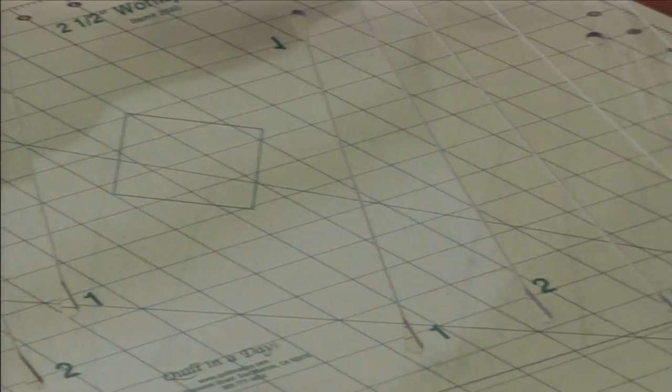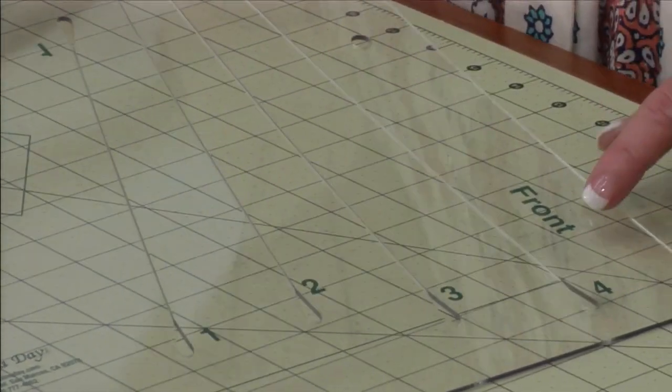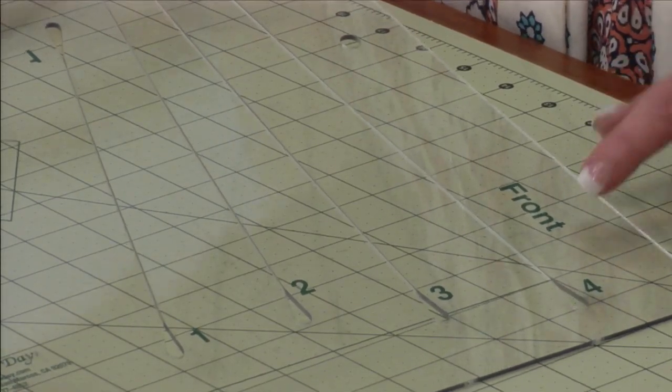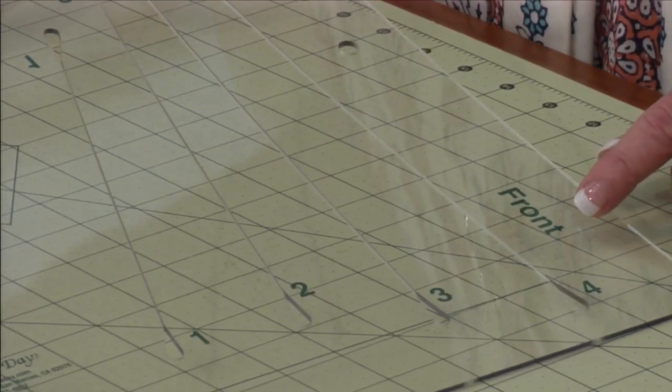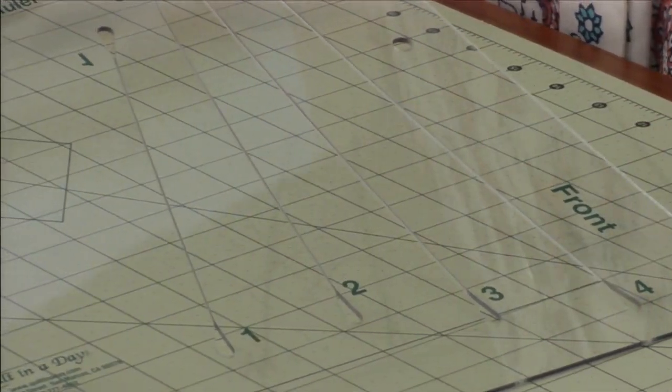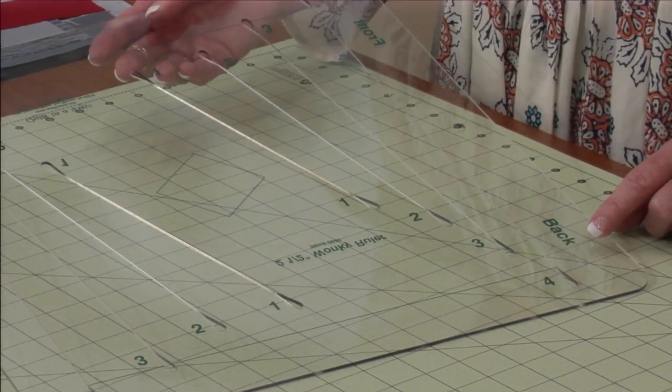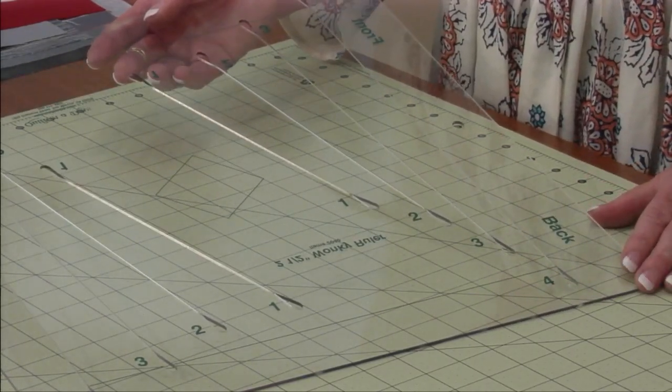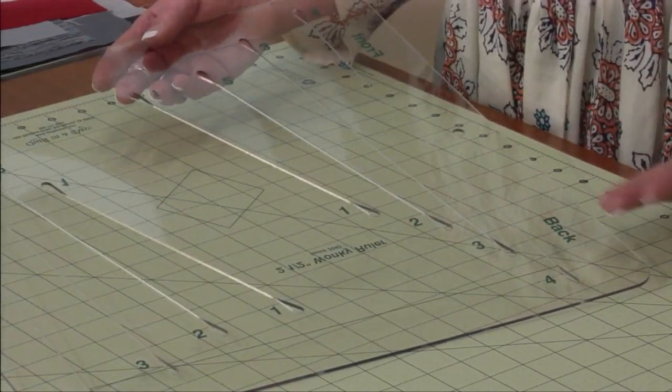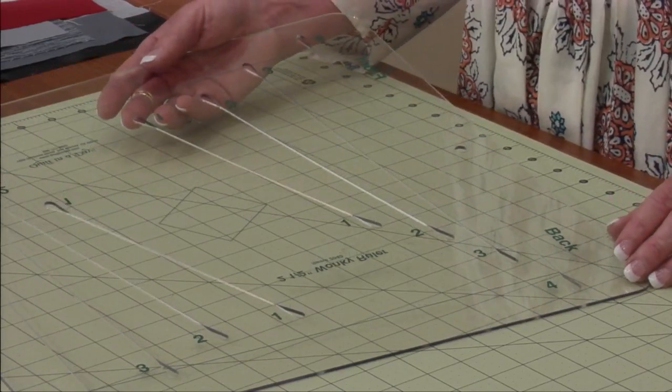And then over on the side it's very important that you notice and you have the word front facing. You should be able to read the word. That's going to make your block rotate in a counterclockwise motion. If we turn the ruler over you'll see you now can read the word back. And that's going to have your block rotate in a clockwise motion. So depending on what pattern you're using that's going to be real important.